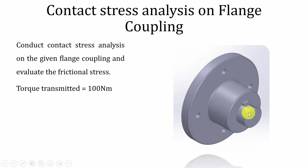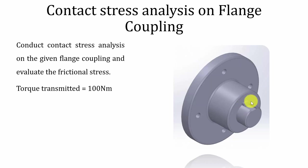In this assembly, we have a flange, a shaft, and a key. The shaft is in contact with the key, and the key is in contact with the flange. We are going to find out the stresses in between the shaft and the key, then the key and the flange, and in between the flange and the shaft.